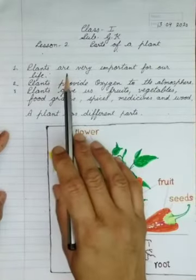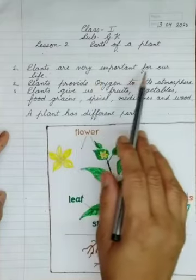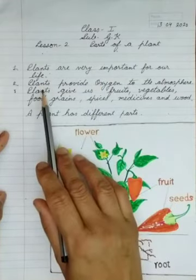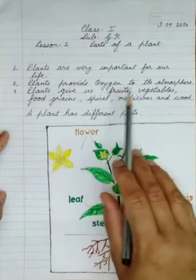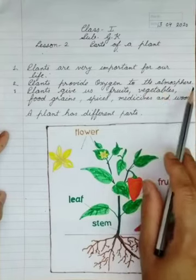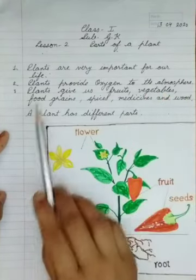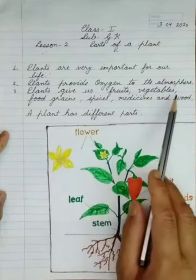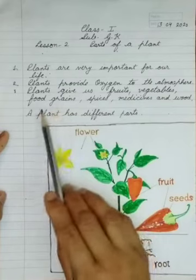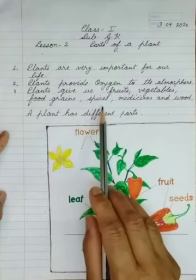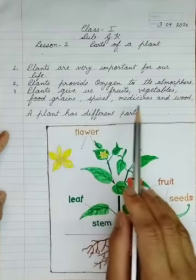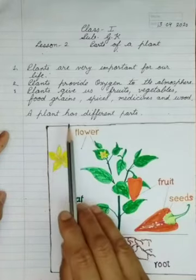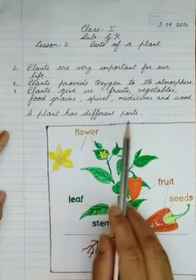Plants are very important for our life. Plants provide oxygen to the atmosphere. Plants give us fruits, vegetables, food grains, spices, medicines and wood. A plant has different parts.